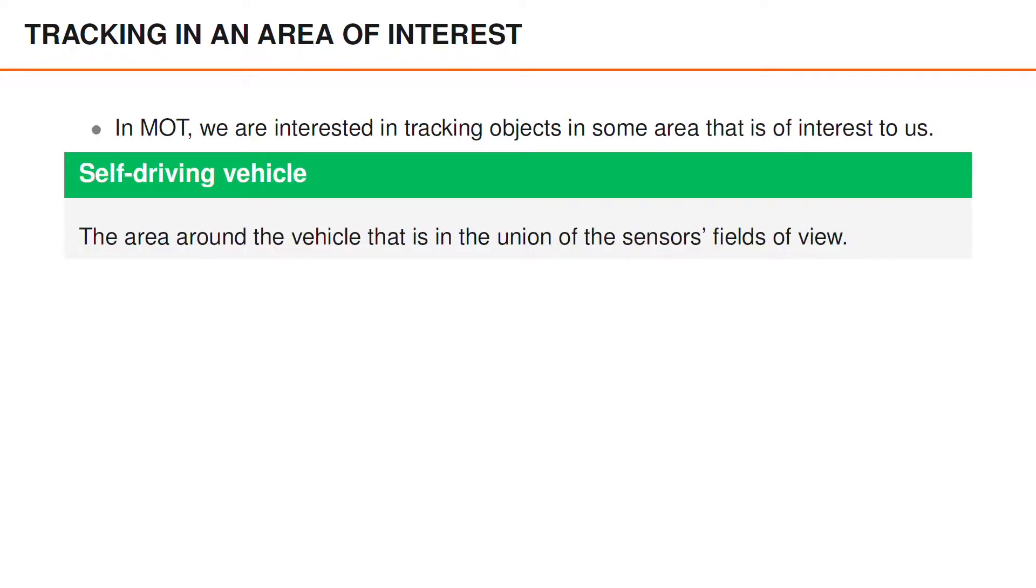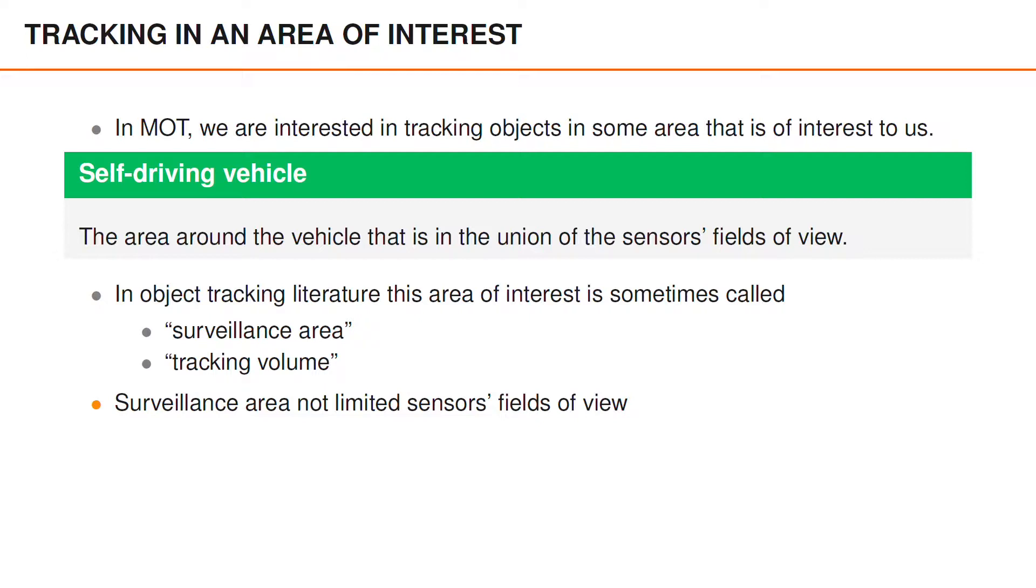In the example we had earlier with an autonomous car, we said that the surveillance area can be the union of the sensors' field of view. But we have to note here that this is not always the case. The surveillance area is not limited to being the field of view of the sensor that we are using.